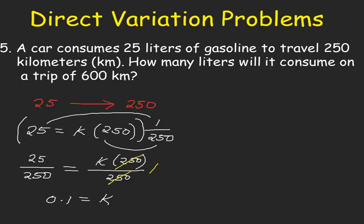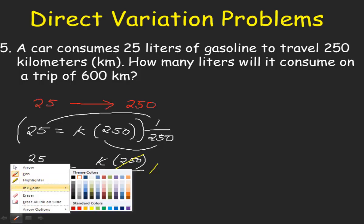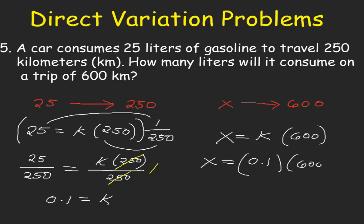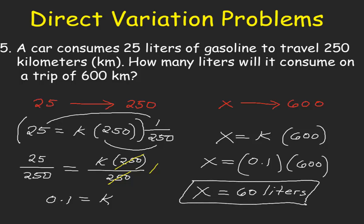How many liters will it consume on a trip of 600 kilometers? The amount of liters is unknown, so let us represent that by x. So x is to 600. Our direct variation equation will be x is equal to k times 600. We know that k is equal to 0.1. So x equals 0.1 multiplied by 600, which is 60 liters. So it will need 60 liters to travel a distance of 600 kilometers.